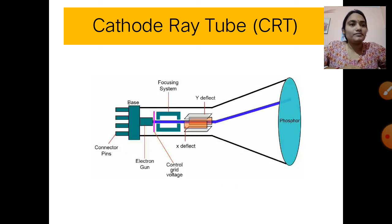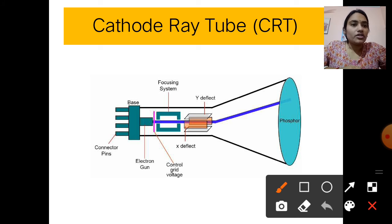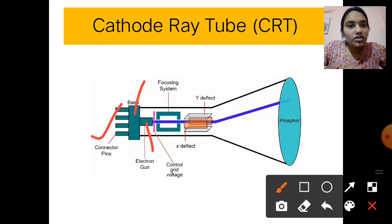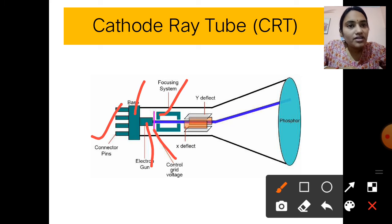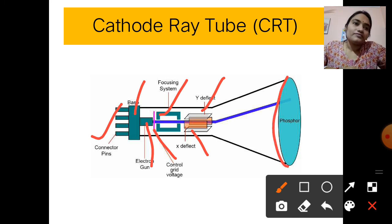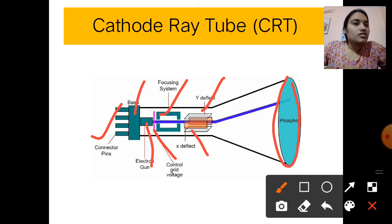This is the picture of a CRT monitor. It shows connector pins, the base, the electron gun, the focusing system, the control grid voltage which controls the voltage, the Y-deflect and X-deflect plates, and the phosphorus-coated screen. I will also discuss how it operates.